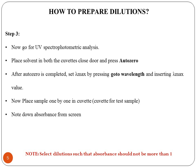Note down the absorbance from the screen after placing samples one by one in the cuvette. Select dilutions such that absorbance does not exceed one. For calibration curve, 5 to 6 dilutions are required, and no dilution should show absorbance greater than one, as this is unacceptable in UV absorption. Select only dilutions that show absorbance below one.